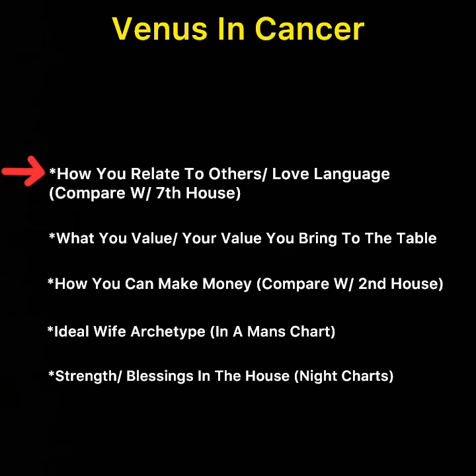In terms of what you value — you value the home and family, which is also what Cancer represents. Venus is the planet of beauty and Cancer is the sign of the home, so what you'll find is that most people with Venus in Cancer like their home to have beautiful aesthetics. When you go to their home, they like it to be in order and looking nice.